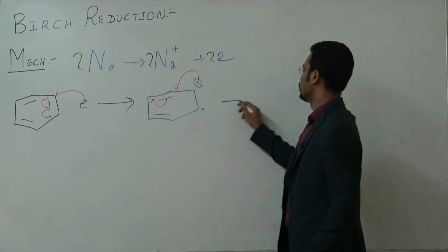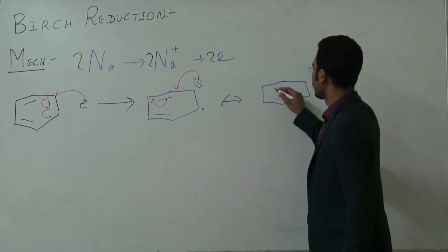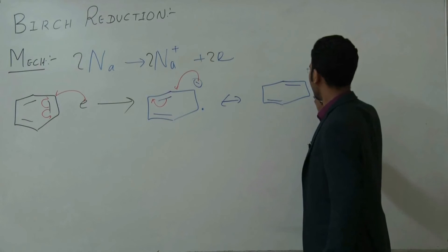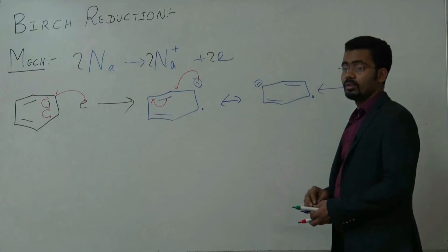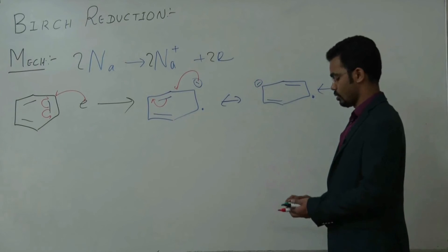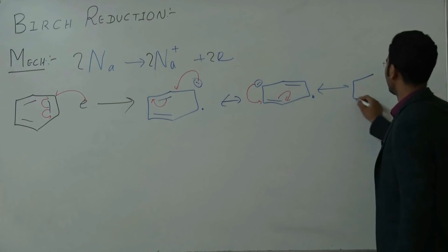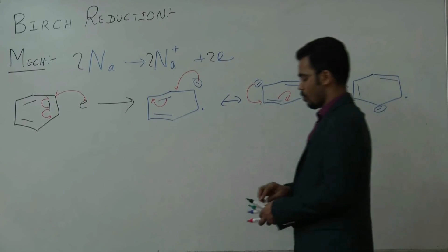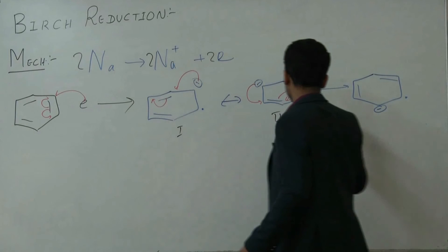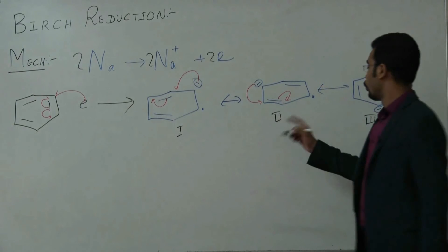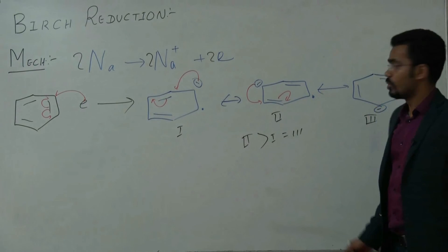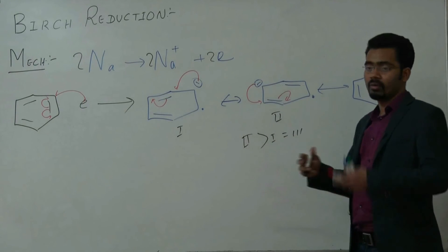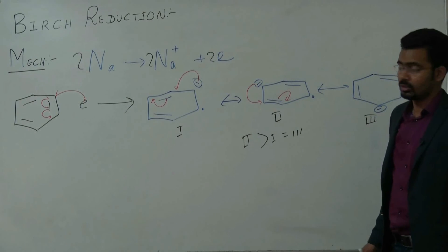What is the resonating structure? The resonating structure will have a double bond, double bond, a free radical here, and a negative charge there. Now consider the stability order: if you have structures 1, 2, and 3, the stability order is 2 > 1 = 3, because in structure 2 both unbonded electrons are at maximum distance from each other. This is the criteria of stability of canonical structures.